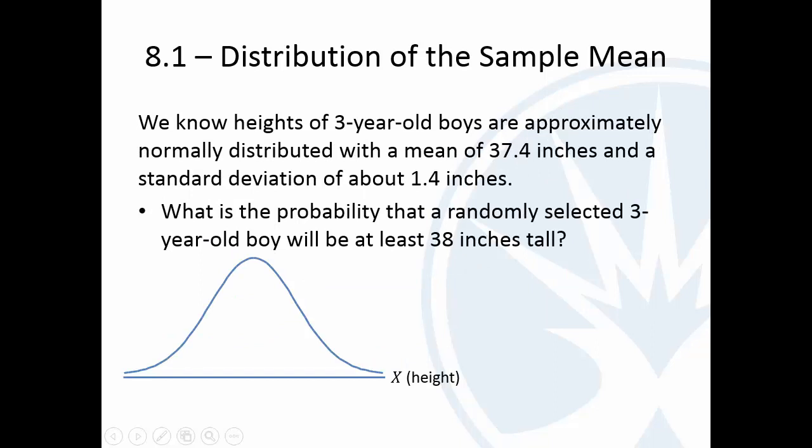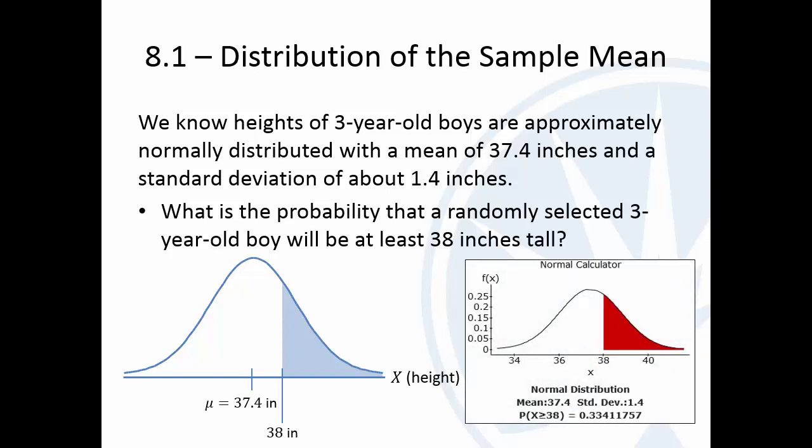So let's do some examples. I've got a couple here. I just took screenshots of StatCrunch. We may pop over there later, but I just wanted to speed it up a little bit. So we know that we've been looking at these heights of 3-year-old boys. We know they're approximately normally distributed with a mean of 37.4, standard deviation of 1.4 inches. So we could ask the question from Chapter 7, what is the probability that a randomly selected 3-year-old boy will be at least 38 inches tall? So we know the mean is 37.4 inches. That will be right in the middle. 38 then will be less than 1 standard deviation, so not too far to the right. And we're going to find that area to the right of that. It's about 33% chance of that happening.